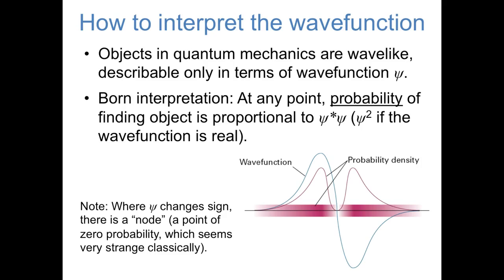This point is called the node, and it's really interesting. We're saying that the object can be on the right, it can be on the left, but it can't be at this point in the middle. Classically, that seems strange, and leaves us wondering how the object would get from one side to the other. But in quantum mechanics, it really doesn't even make sense to think like that. The object is wave-like, so it can have character in different regions of space. That's just how things work in quantum mechanics.